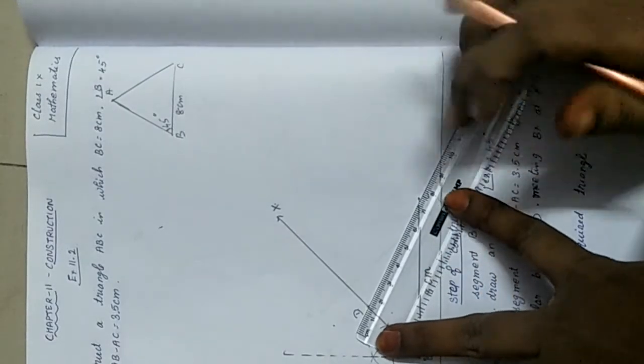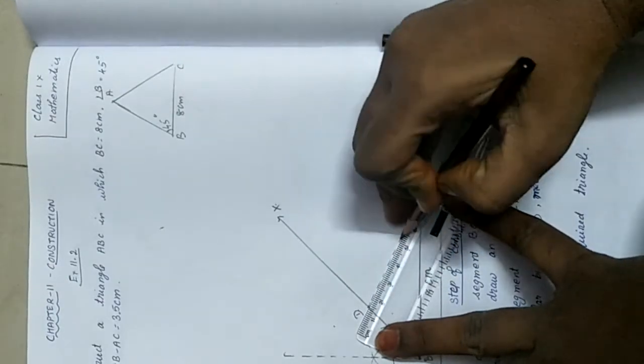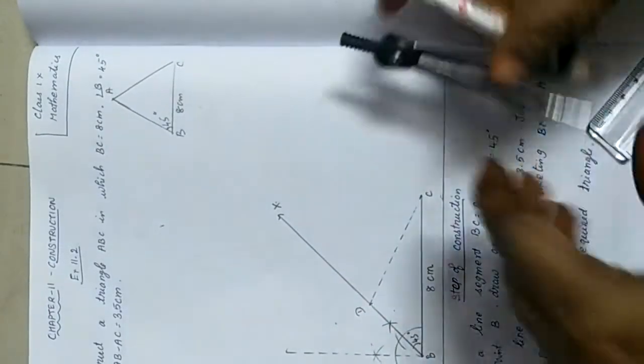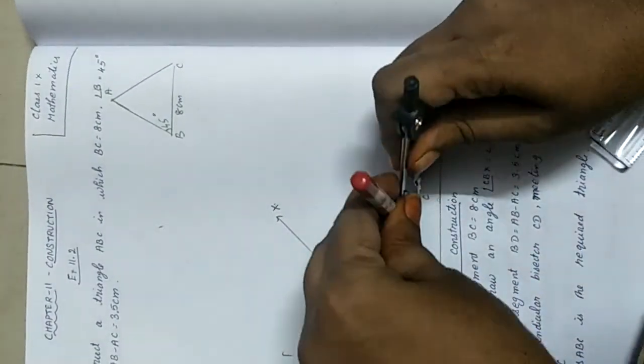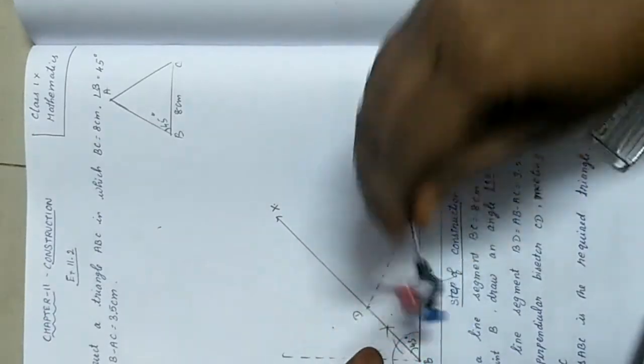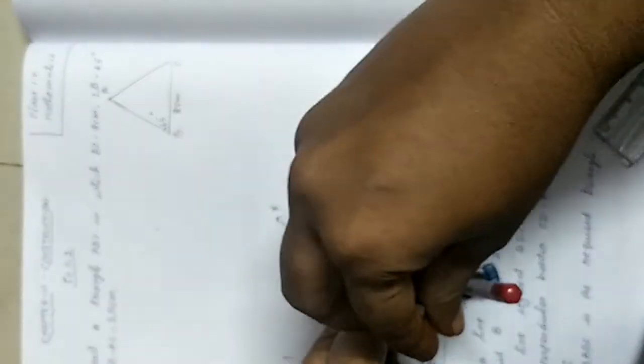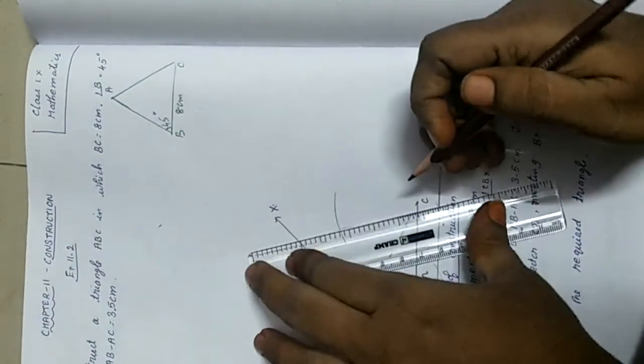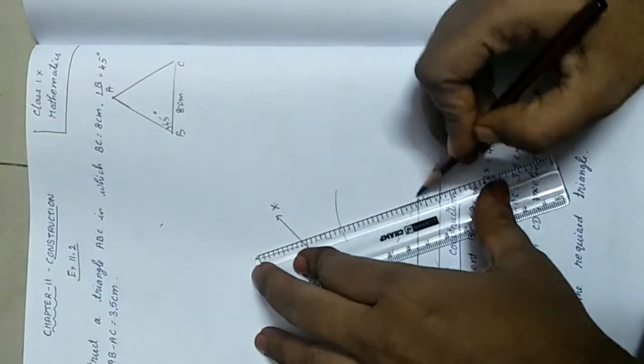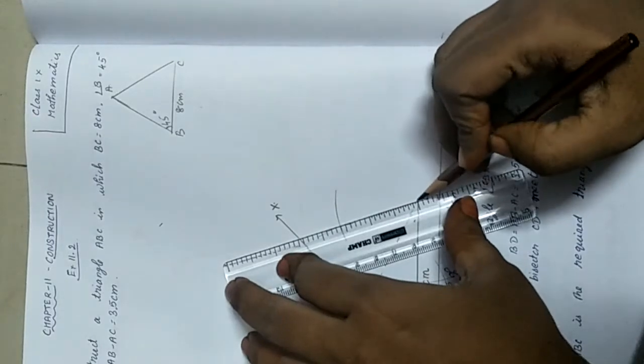Now you join CD with a dotted line. Next, we are going to find the perpendicular bisector of CD. We are going to construct a perpendicular bisector of CD. More than half below and above, cut an arc.